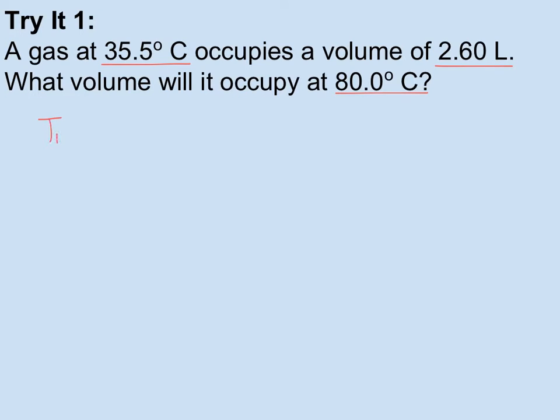So I have temperature 1 at 35.5 degrees Celsius. I'm going to immediately change that into Kelvin, which is the same as 308.5 Kelvin. I have V1, which is 2.60 liters. And I'm being asked for V2 if T2 is 80 degrees. So again, I'm going to add the 273 to that right away. And that's 353.0 Kelvin.